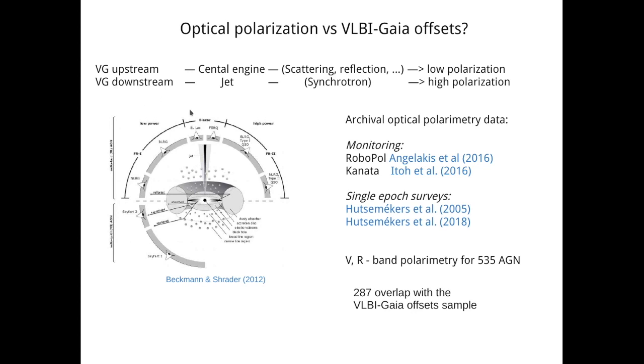In the opposite case, when the VLBI-Gaia offset is pointed downstream, we are supposedly observing the synchrotron emission coming from the jet. In this case we expect a very high level of optical polarization because we know from theoretical works that synchrotron can be up to 80% polarized in the optically thin case in the ideal situation.